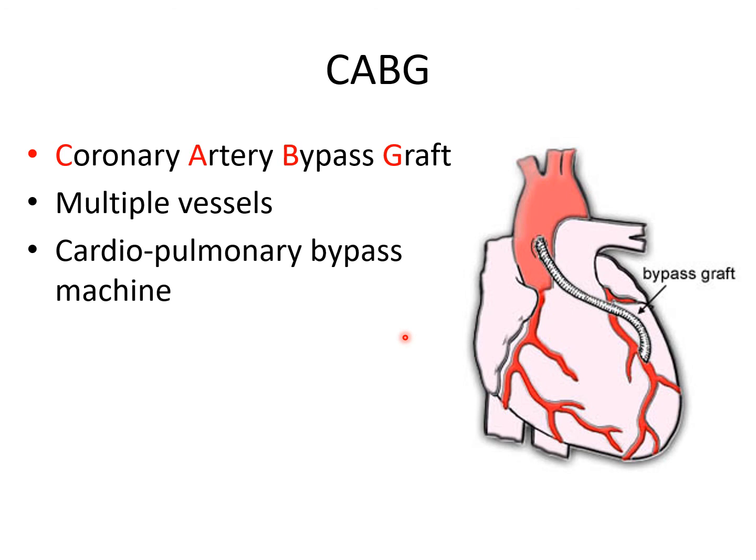Sometimes there is multiple vessel disease—more than a single coronary artery has an occlusion—and in that case, a stenting procedure is not adequate. The patient would need open heart surgery called a CABG, or coronary artery bypass graft. The grafting material is typically taken from the saphenous vein in the leg; these patients may have a long scar along the inside of one leg, and a portion of that saphenous vein is used to bypass obstructions in the native coronary artery.